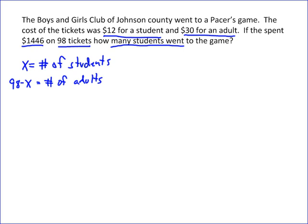So the number of students is x and 98 minus x is the number of adults. We can write an equation for the value of the tickets: 12 times x is how much they spend on student tickets, and 30 times (98 minus x) is how much they spend on adults. Adding those together gives the total amount spent: $1,446.